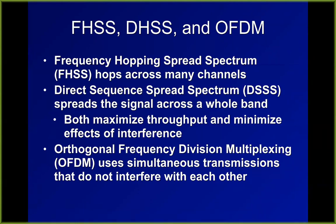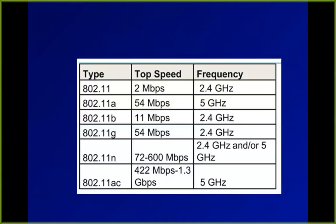Orthogonal frequency division multiplexing (OFDM) is like wavelength division multiplexing on fiber optic cables — it uses different radio frequencies that do not interfere with one another to move more data simultaneously. The original wireless standard was 802.11, which was very old and slow. The first big commercial success was 802.11b. 802.11a came first and was faster but ran on 5 GHz with shorter range and didn't get popular. After b came g, n, and ac as speeds increased.